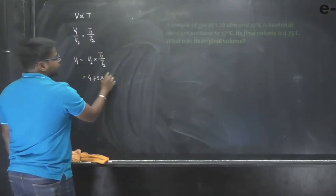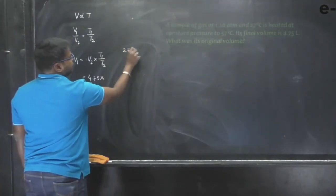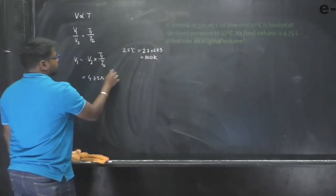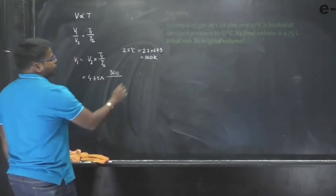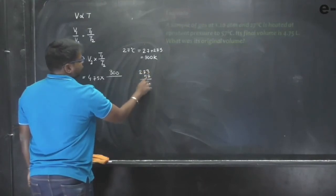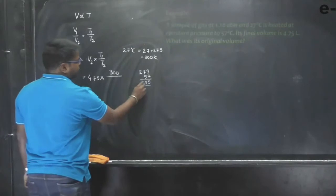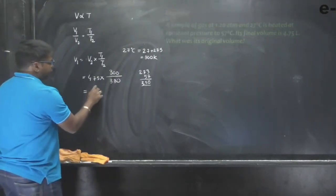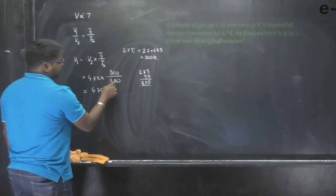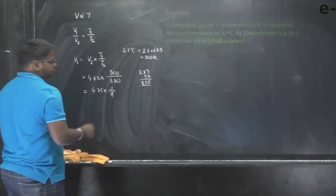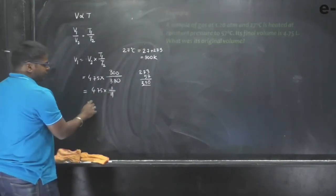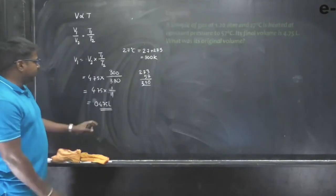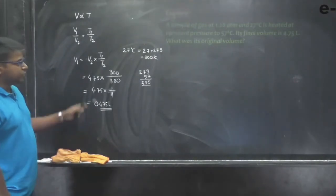We need to convert temperatures to Kelvin: T1 = 27 + 273 = 300 K, and T2 = 57 + 273 = 330 K. So V1 = 4.75 × (300/330) = 4.75 × (30/33), approximately 4.75 × (1/11), which is close to 4.75/10 ≈ 0.475 liters. So the original volume is approximately 0.475 liters. Make a note of it.